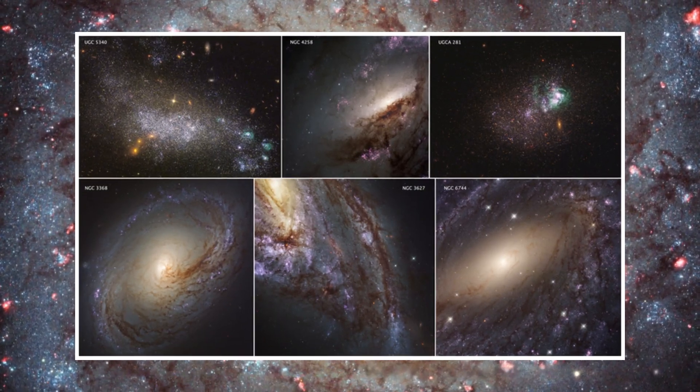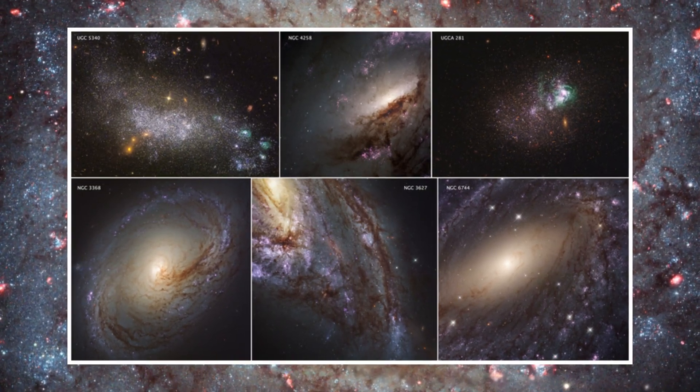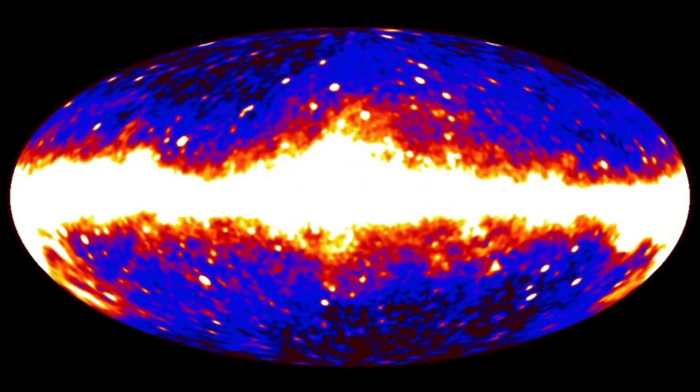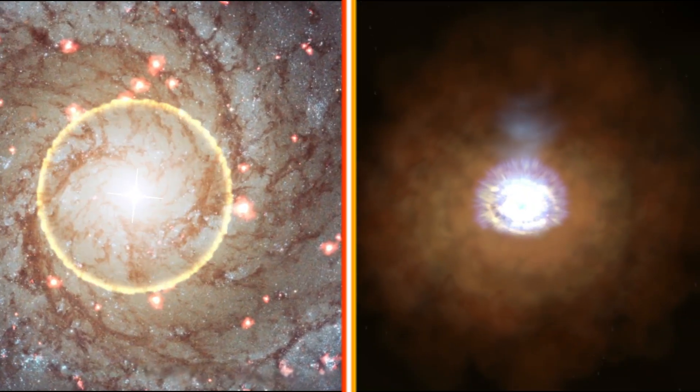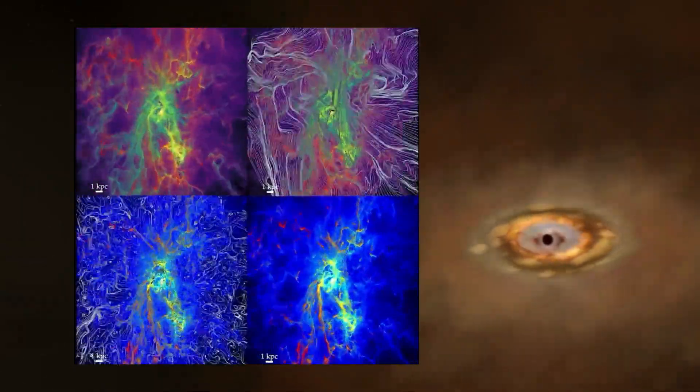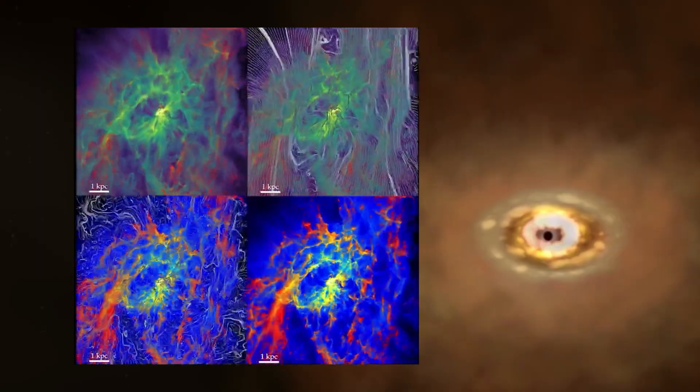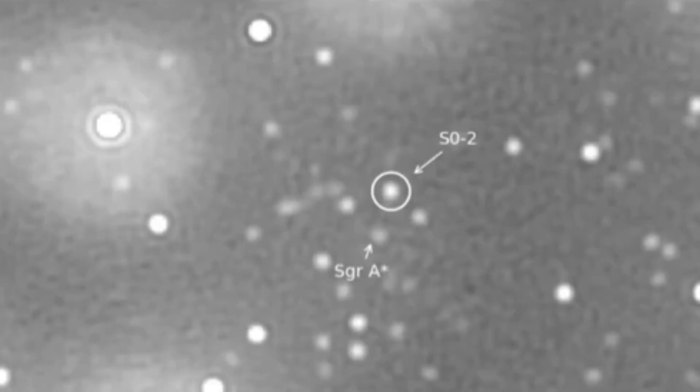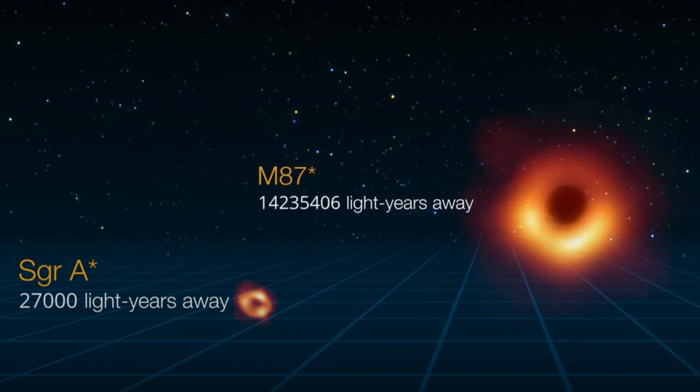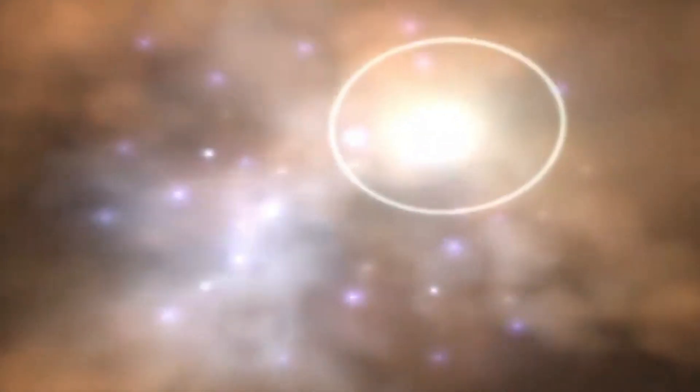Similar stellar-driven outflows have been observed in starburst galaxies, where concentrated star formation leads to large-scale galactic winds. While both theories offer compelling explanations, recent computer simulations increasingly favor the black hole eruption hypothesis. These models suggest that Sagittarius A star likely went through an active phase millions of years ago, unleashing enough energy to form the massive bubbles observed today.